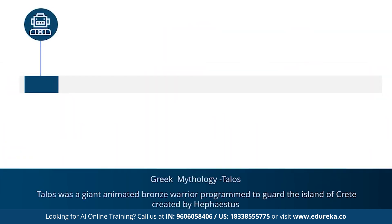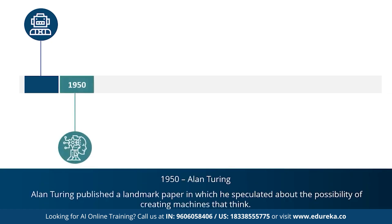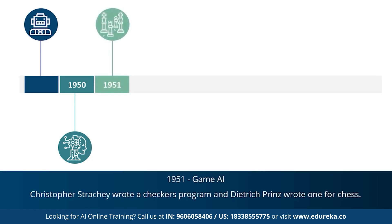The concept of AI goes back to the classical ages. Under Greek mythology, the concept of machines and mechanical men were well thought of. An example is Talos — a giant animated bronze warrior who was programmed to guard the island of Crete. In 1950, Alan Turing proposed the Turing test, which determines whether or not a computer can intelligently think like a human being. The Turing test was the first serious proposal in the philosophy of artificial intelligence. 1951 marked the era of game AI, where computer scientists developed programs for checkers and chess.